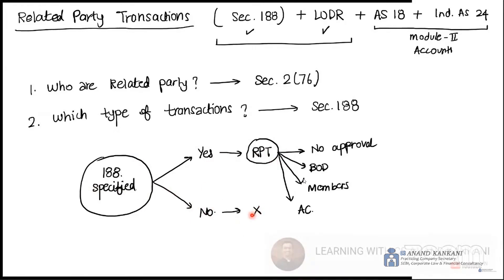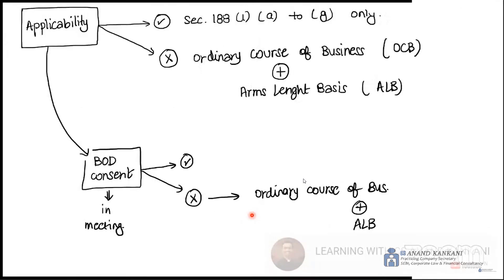A classic example: if you have a related party in your holding company and the salary is above a high amount, it will not be a related party transaction. Now, where does the applicability come from? Those transactions given in Section 188, Sub-section 1, Clause A to Clause G — only those are related party transactions.